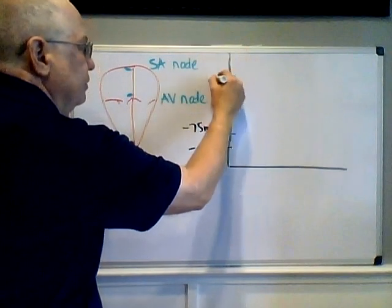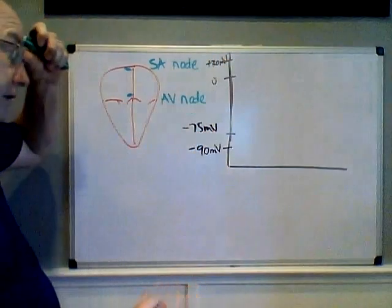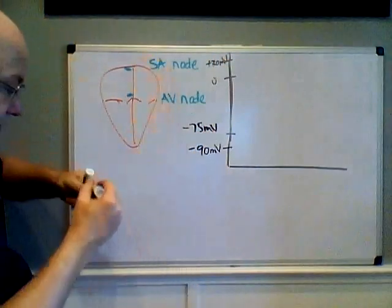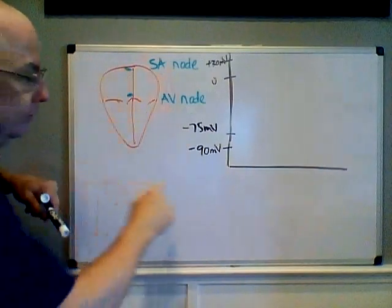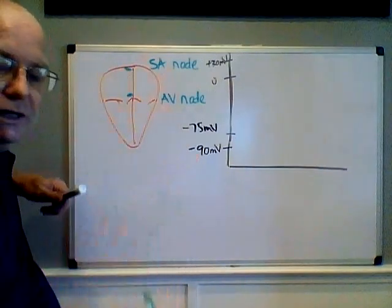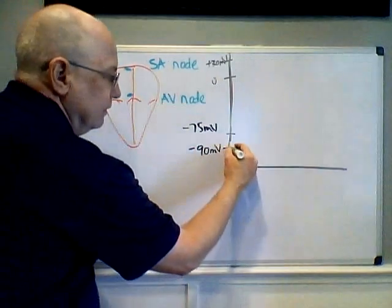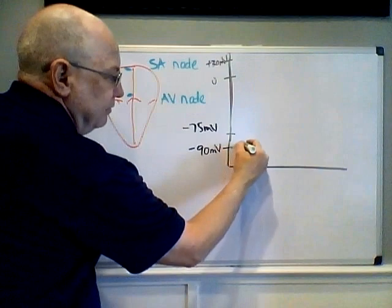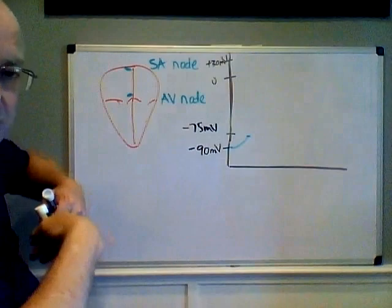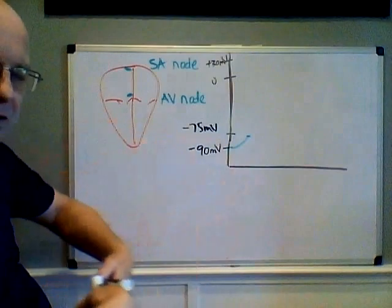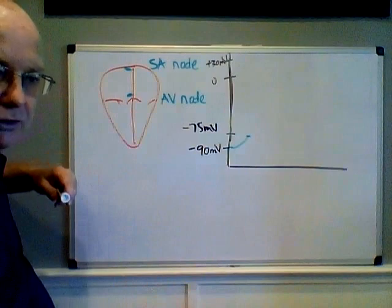Somewhere up here we have zero, and plus 30 millivolts. This is not drawn to scale, but the concept stands. Because the SA node has leaky sodium channels, as sodium ions leak in faster than we can get rid of them, the potential will slowly drift towards threshold. Once it hits threshold, it begins opening voltage-gated sodium channels one by one until all of them open, and it will depolarize.